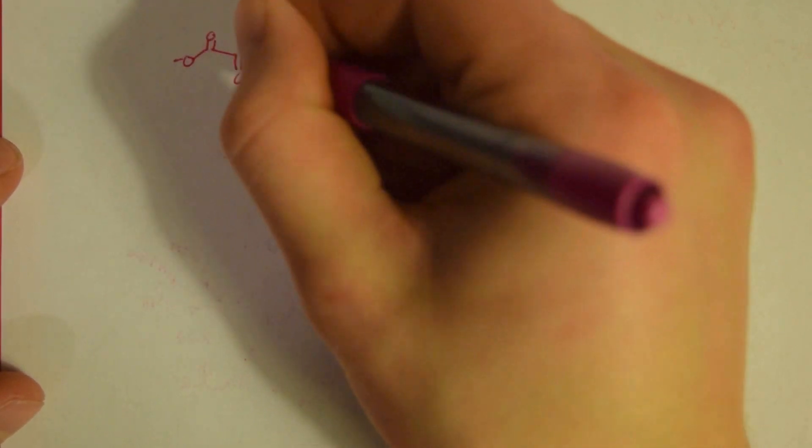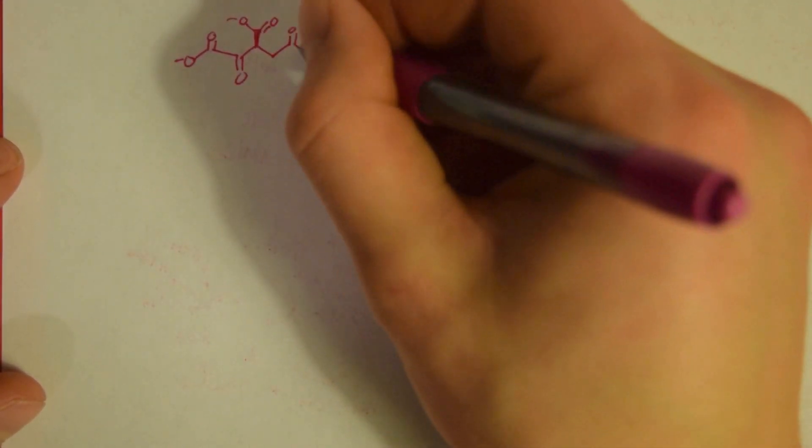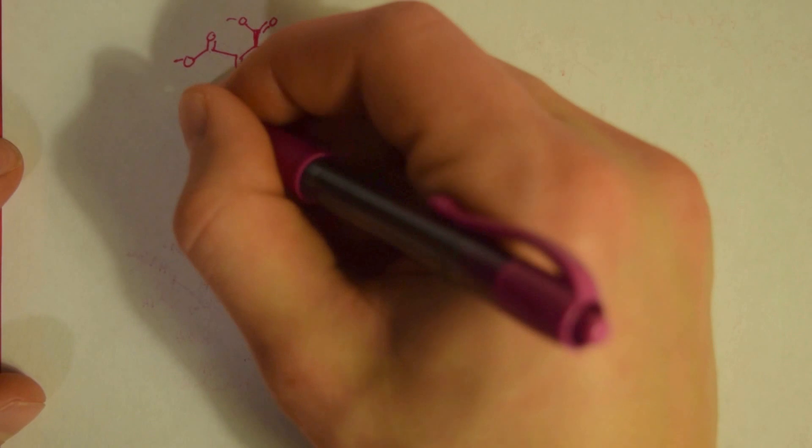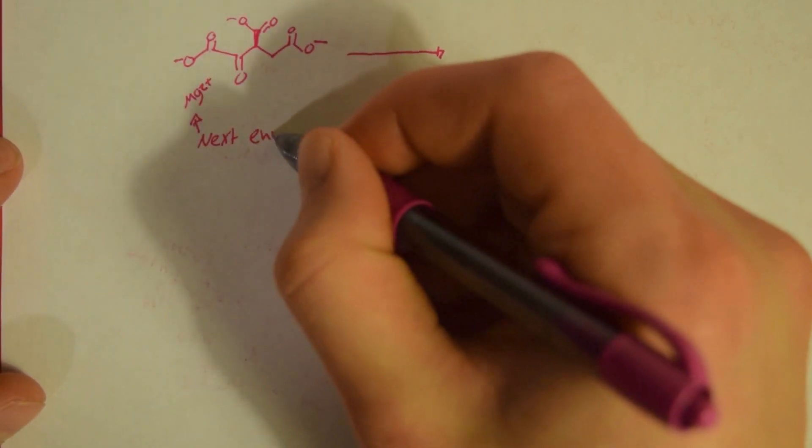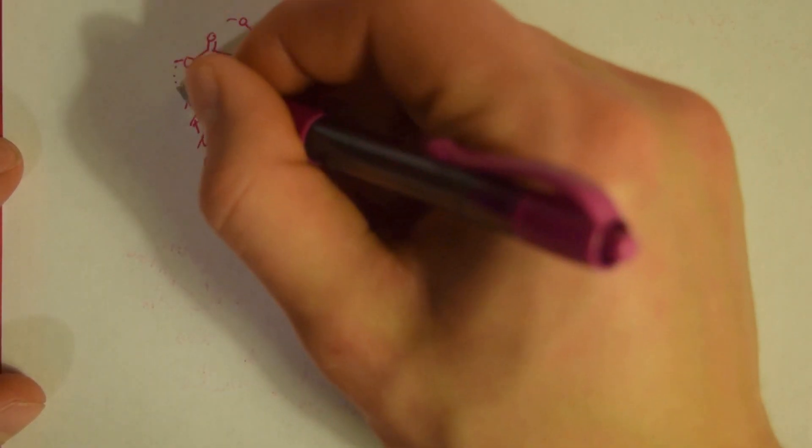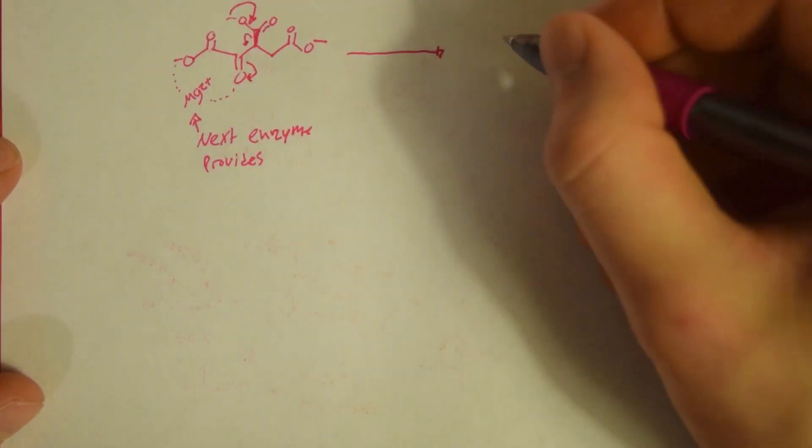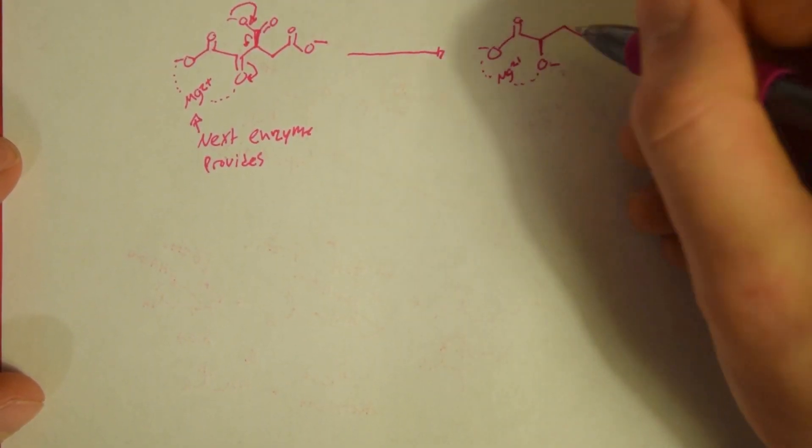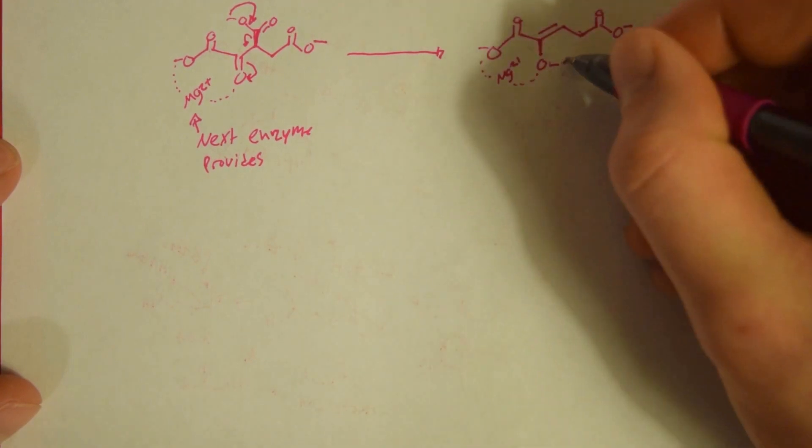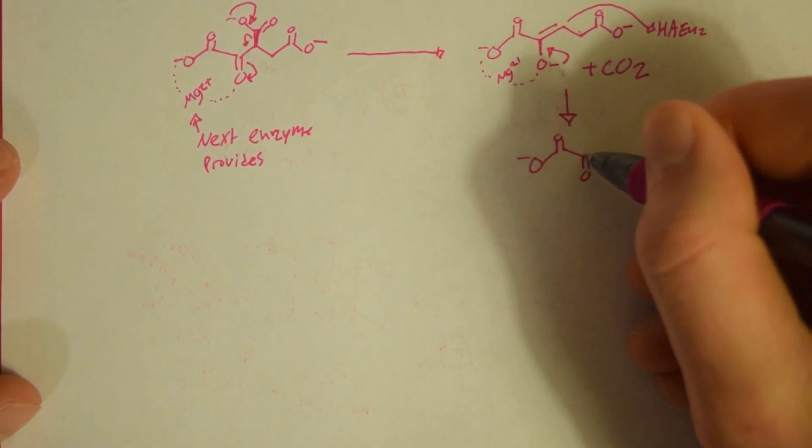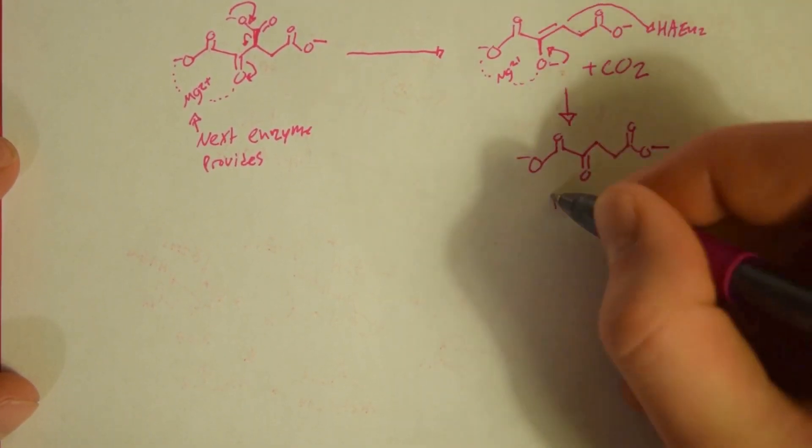So the next part, we're going to take that oxaloacetate and we're going to kick off a carbon dioxide from it. The enzyme provides an Mg2+, which stabilizes this reaction. So that oxaloacetate is going to end up going to alpha-ketoglutarate.